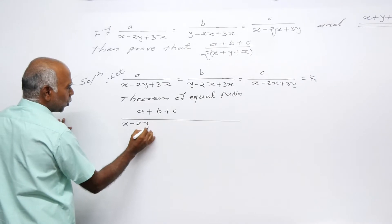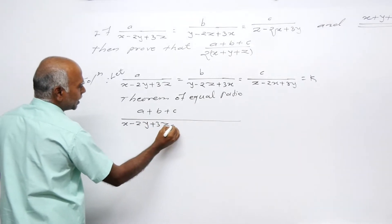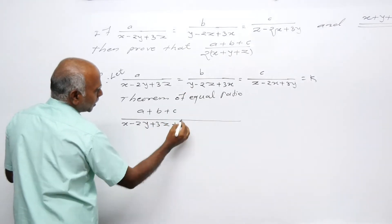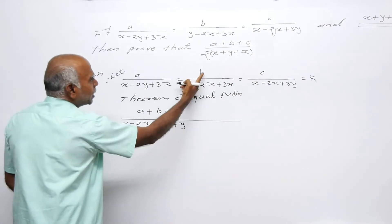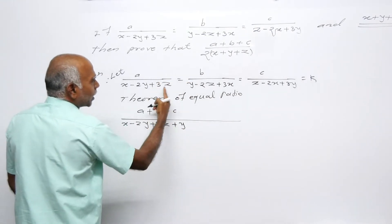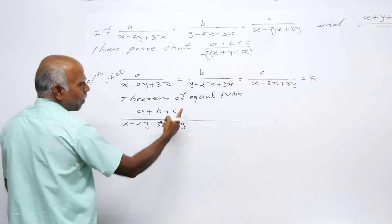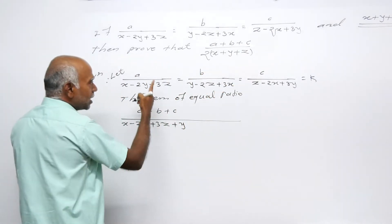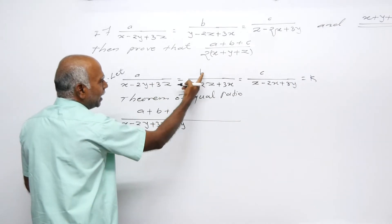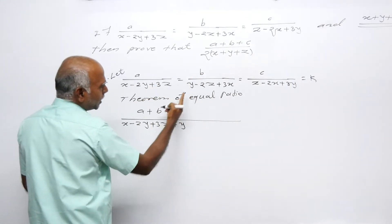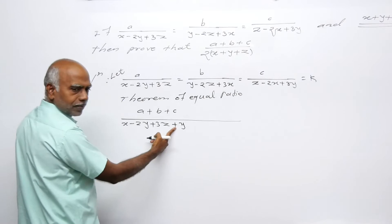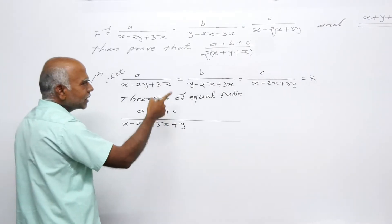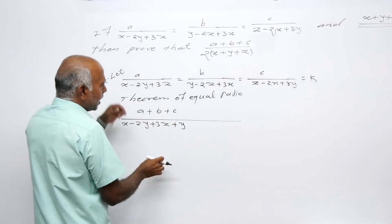x minus 2y plus 3z, plus y when we calculate the second ratio, plus z when we calculate the third ratio - this is what we need to work with.